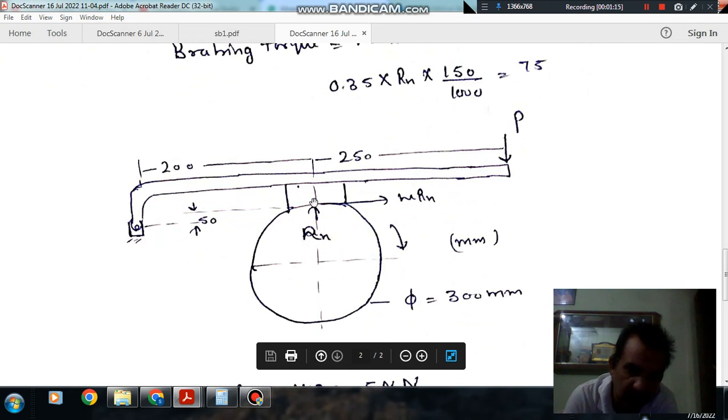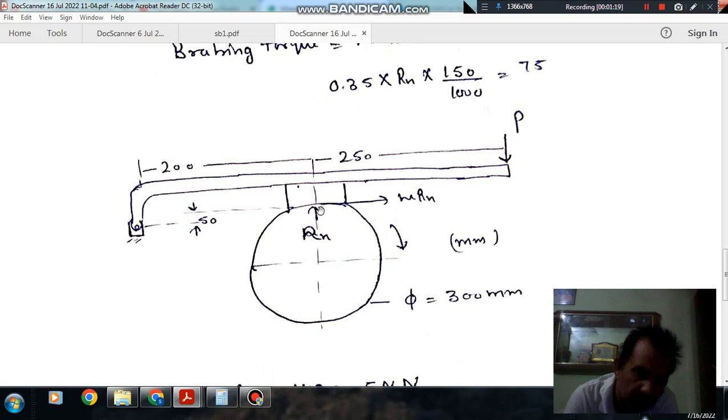The drum is moving in this direction, so the force of friction will act in this direction. Rn is the normal reaction, and the force of friction is μRn.